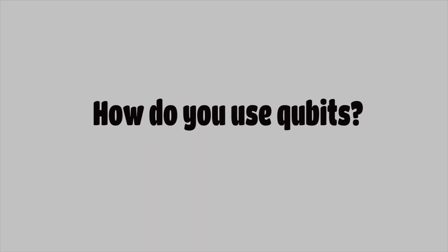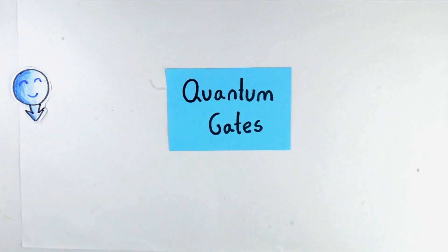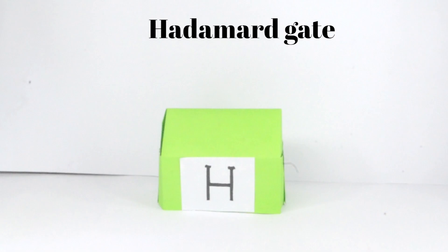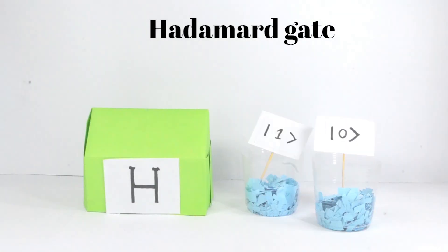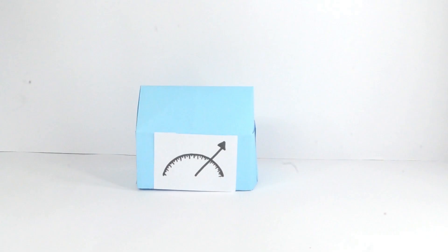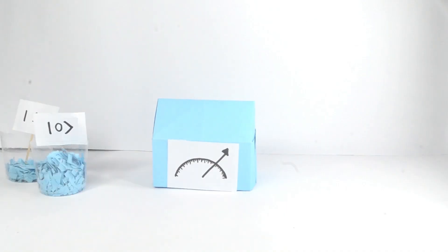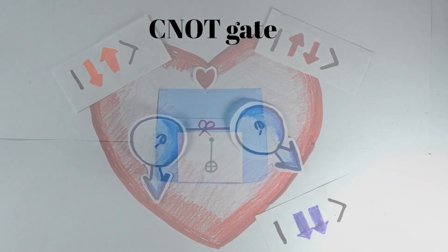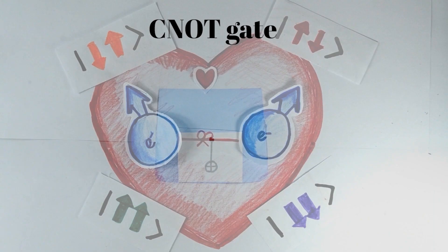We use energy operators called quantum gates to manipulate the qubits. A Hadamard gate takes a state and turns it into a superposition. Or this one is for measuring. This one is for entangling them or making their spins interdependent.